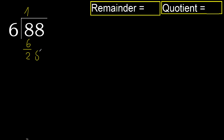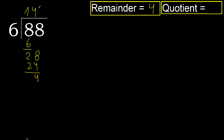Next, bring down to get 28. 6 multiplied by 5 is greater. 6 multiplied by 4 is 24, which is not greater. Subtract: 28 minus 24 is 4. There is no next number, therefore finish it. The answer is 4 remainder 14.